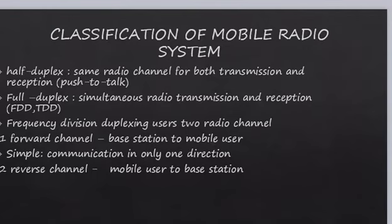Classification of mobile radio systems includes half duplex and full duplex. Half duplex means at the same time we can either send or receive data, while in full duplex we can send and receive data simultaneously. Frequency division duplexing uses two radio channels: forward channels and reverse channels.